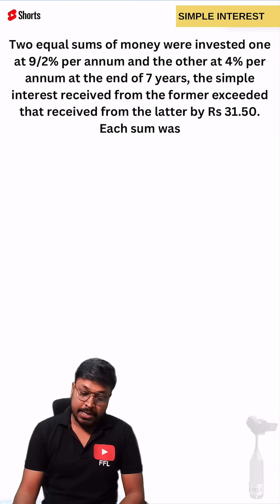Two equal sums of money were invested, one at 9/2 percentage per annum and the other at 4 percentage per annum at the end of 7 years.